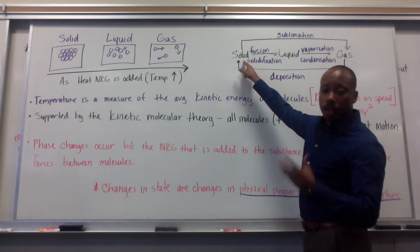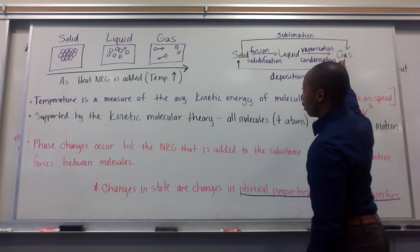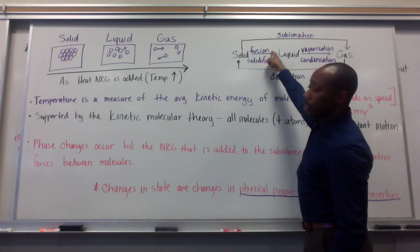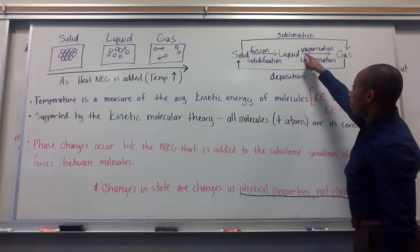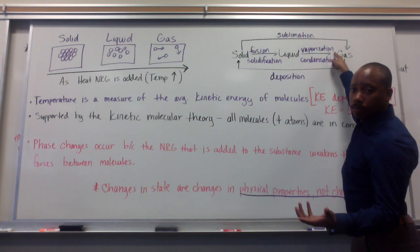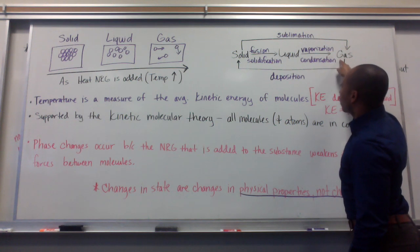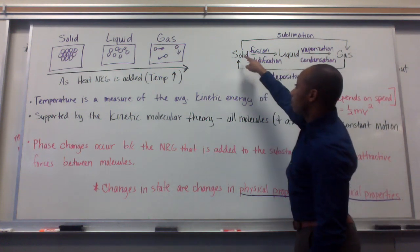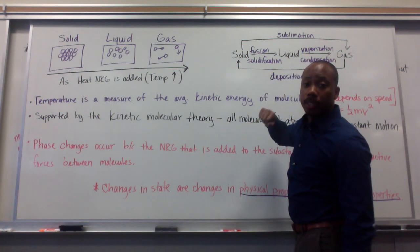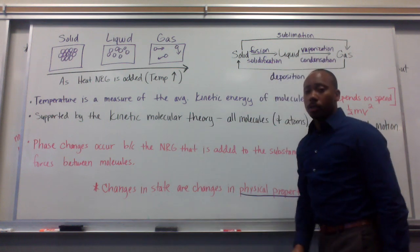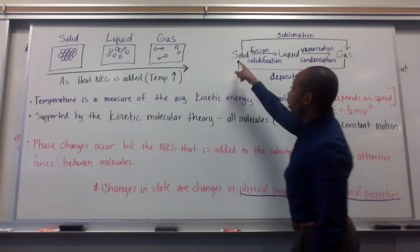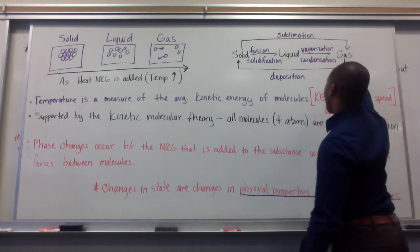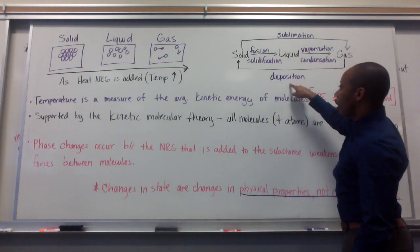A quick summary: solids go to liquids go to gases. A solid becomes a liquid through a process called fusion, also called melting. A liquid becomes a gas through vaporization, sometimes called evaporation. Going the opposite direction, a gas becomes a liquid through condensation, and a liquid becomes a solid through solidification, also known as freezing. There are also two less common phase changes: a solid going directly to a gas — bypassing the liquid phase — through sublimation, and a gas going directly to a solid — bypassing the liquid phase — through deposition.